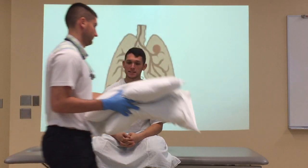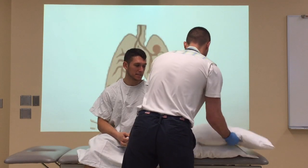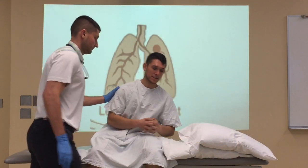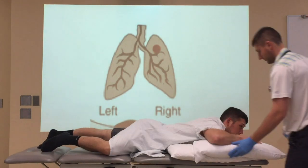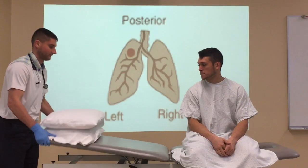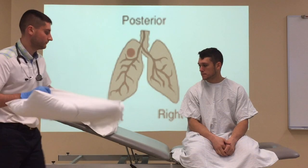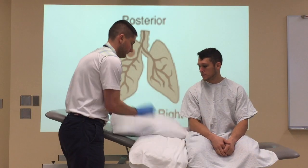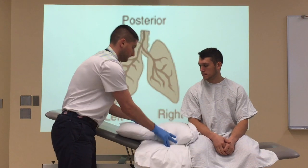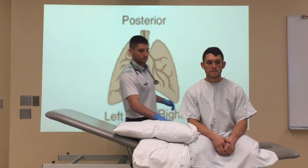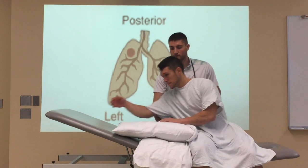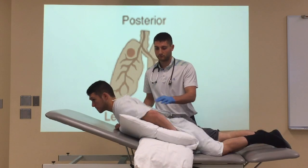For right posterior segments, your patient is positioned prone with pillows propping up the right side of the trunk. For left posterior segments, your patient should be positioned prone with the table in Fowler's position. Pillows should be placed under the left trunk and hip to prop up that side of the body.